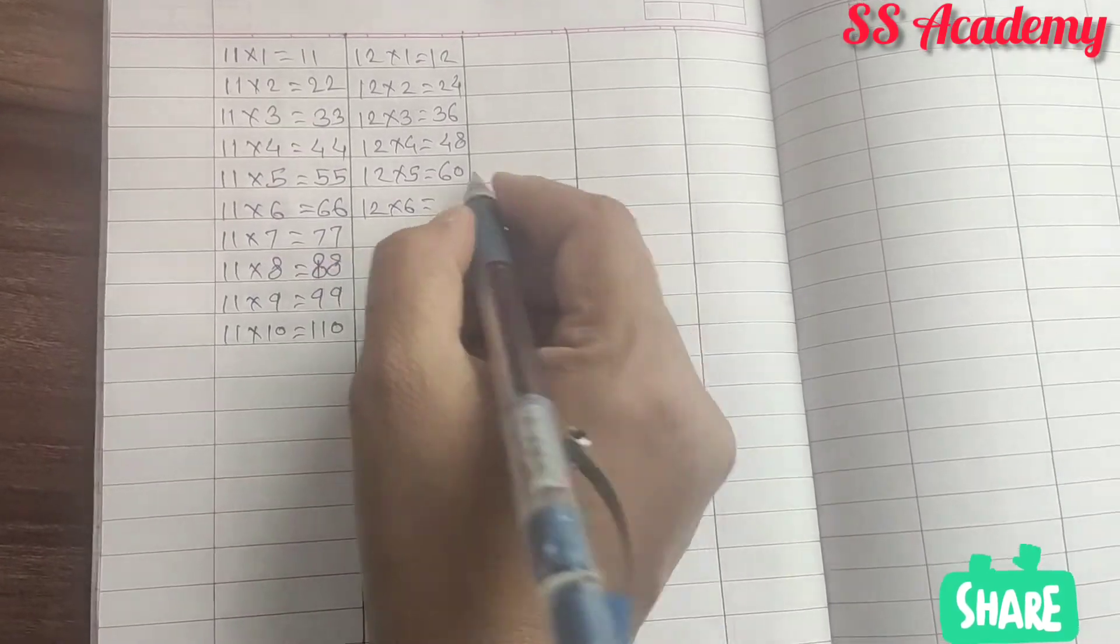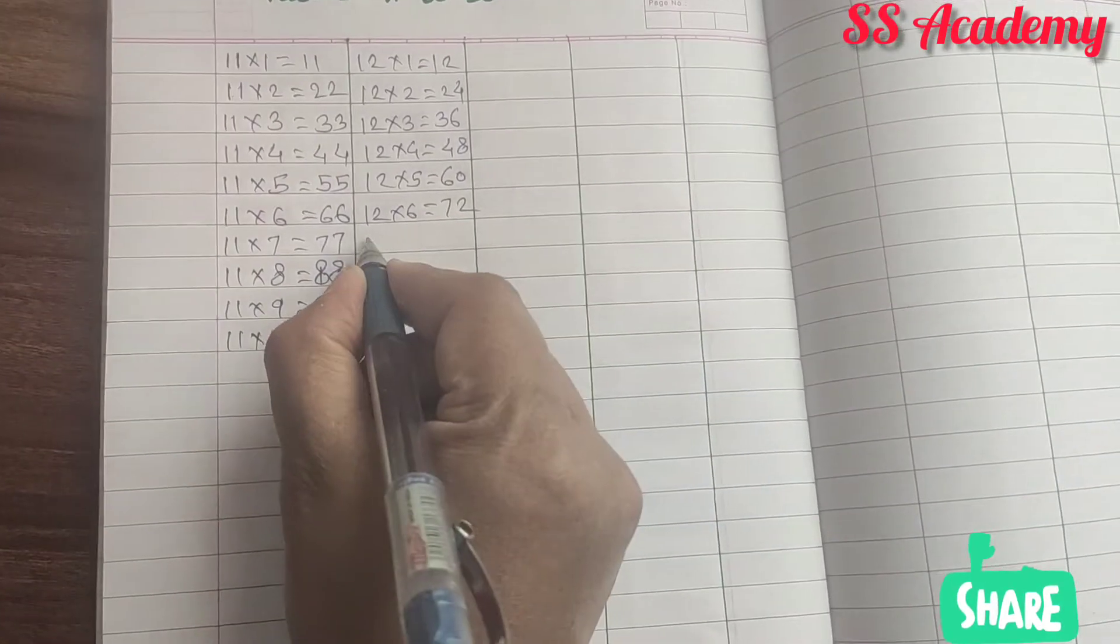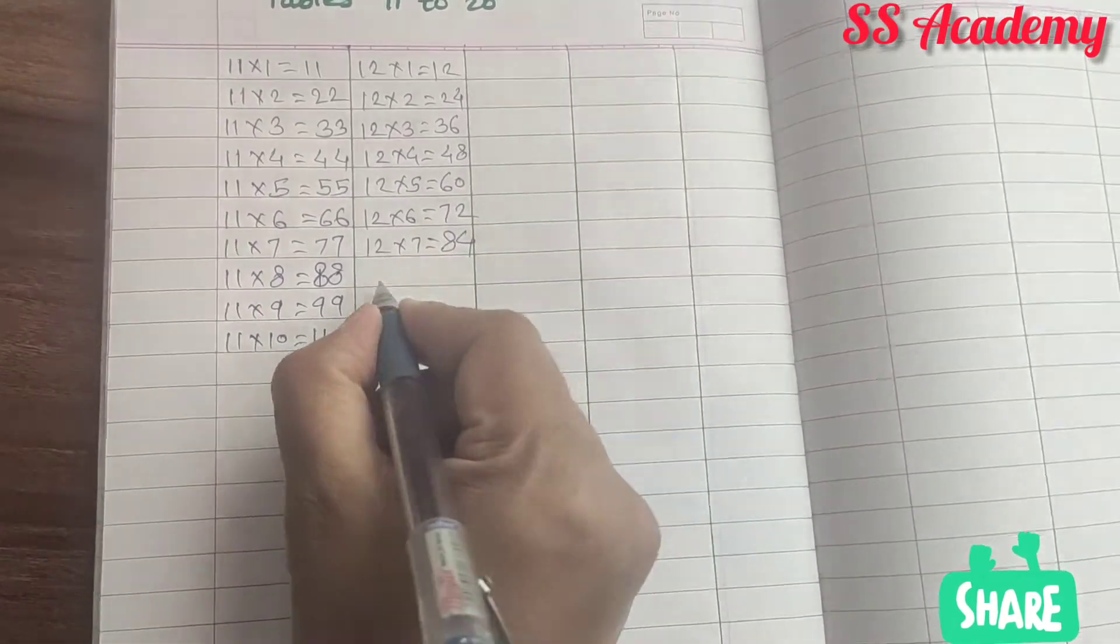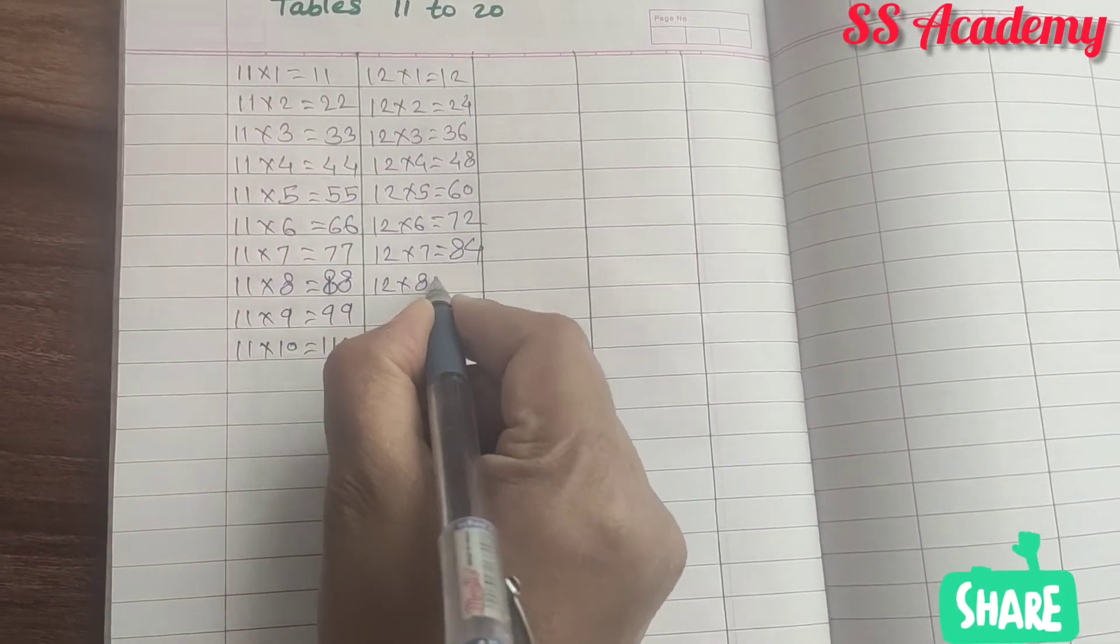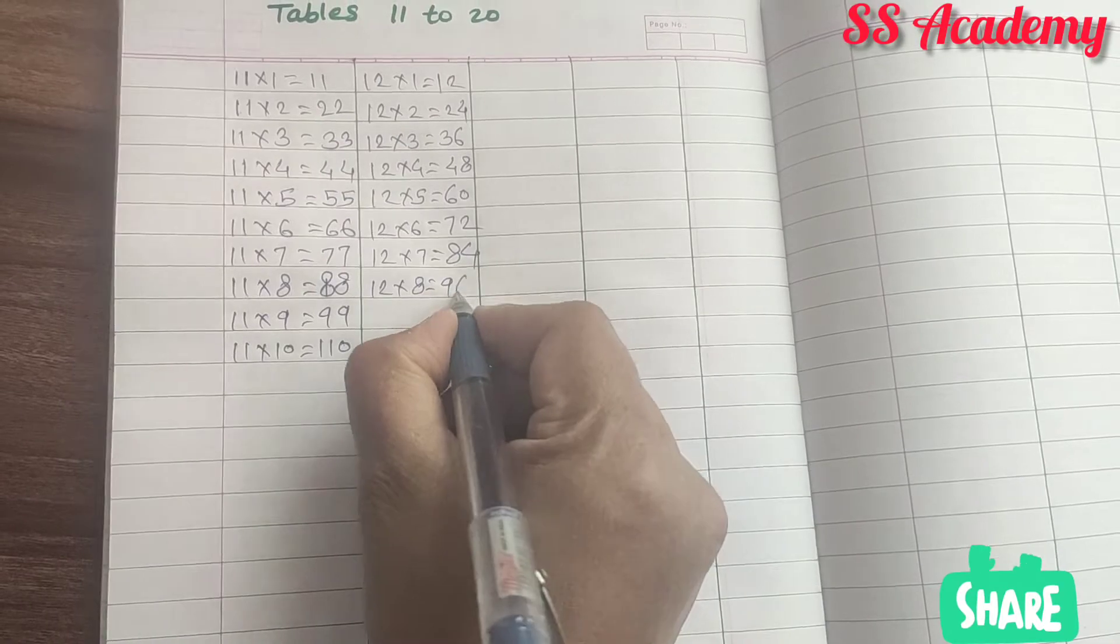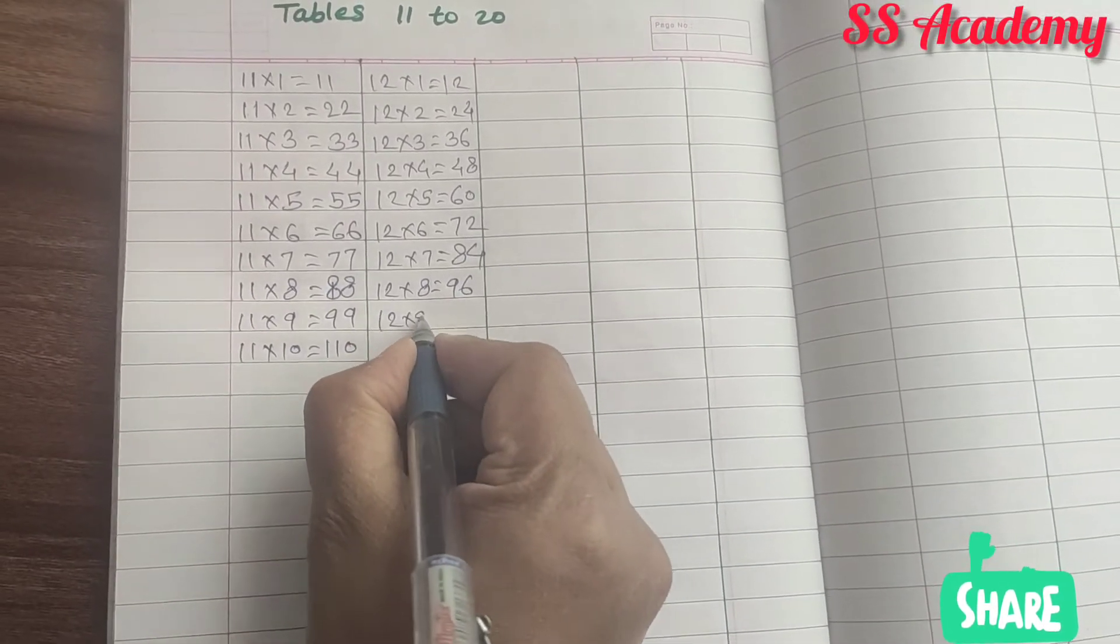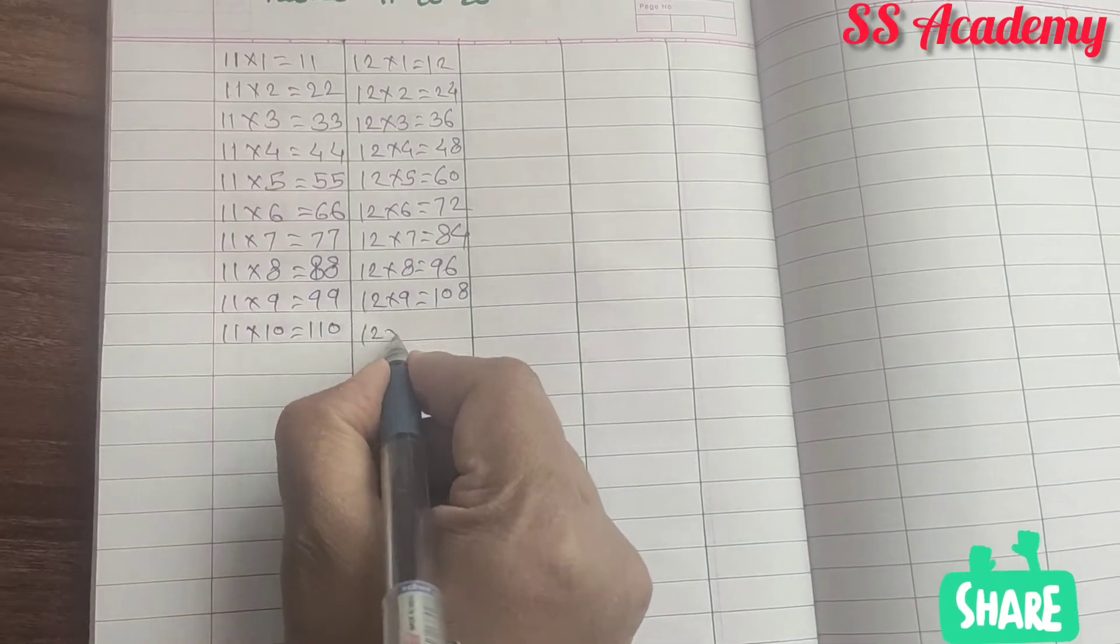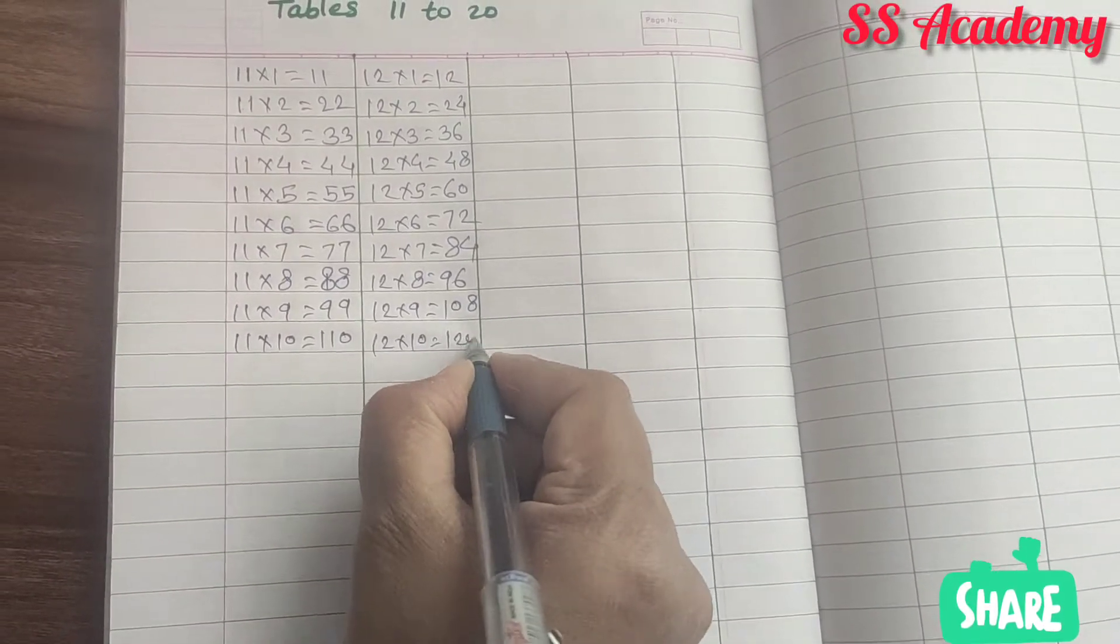12 times 6 is 72. 12 times 7 is 84. 12 times 8 is 96. 12 times 9 is 108. 12 times 10 is 120.